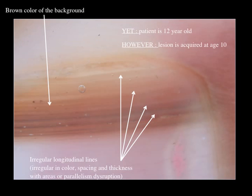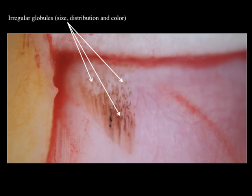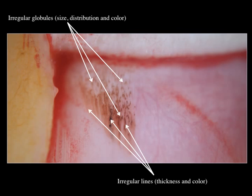Because the lesion is acquired, we decided to perform a surgical exploration of the nail matrix. This is non-contact polarized light dermoscopy of the nail matrix. The pattern shows irregular dots and lines with irregular globules — irregular in size, distribution, and color, with darker and lighter globules. The lines are also very irregular in thickness, color, and spacing.